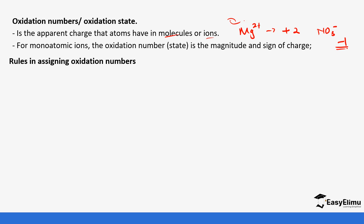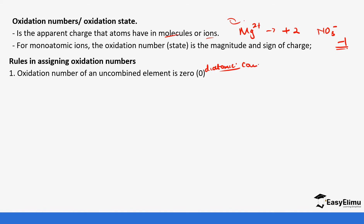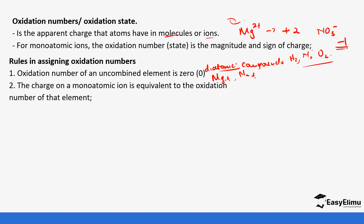When assigning oxidation numbers, we follow these rules. First, the oxidation number of an uncombined element is zero. This applies to pure elements like magnesium solid and sodium solid, as well as diatomic molecules made of the same atom, such as H₂ gas, N₂ gas, and O₂ gas — all have an oxidation number of zero.